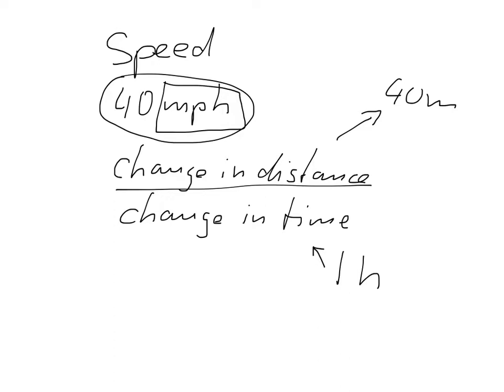An important thing is that speed does not really have a direction. We drive 40 miles an hour without any indicated direction — well, we usually have a direction, but we don't specify it in the term speed.